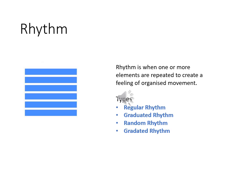Regular rhythm is when you repeat objects one after another in a similar fashion. Gradated rhythm is when the rhythm increases and decreases based on your requirement. Random rhythm is when the beats of elements follow no defined scale or pattern. Gradated rhythm is when you repeat an element but change some aspect of it — for example, repeating squares while rotating them step by step, or increasing their size progressively.